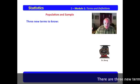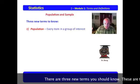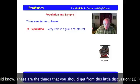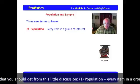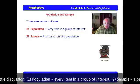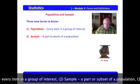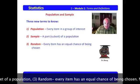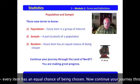There are three new terms you should know. These are the things that you should get from this little discussion. Population: Every item in a group of interest. Sample: A part or subset of a population. Random: Every item has an equal chance of being chosen.